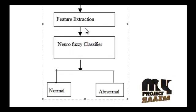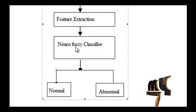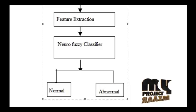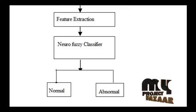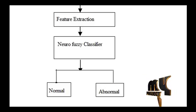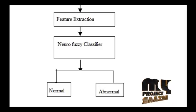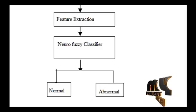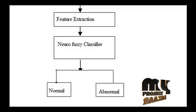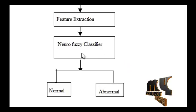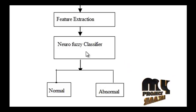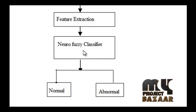Extracted features are labeled and learned through the neurofuzzy classifier. Here we classify the result using ANFIS — the Adaptive Neuro-Fuzzy Inference System — which is a combination of neural network and fuzzy logic. Using the true labels and feature values, it classifies whether the input image is normal or abnormal.